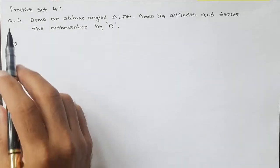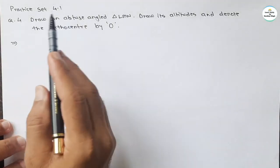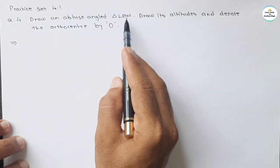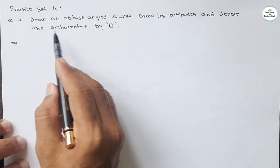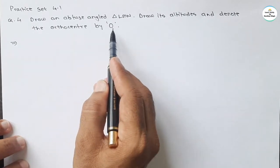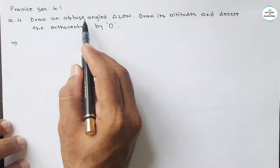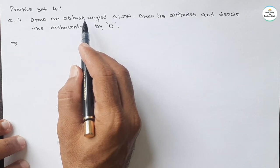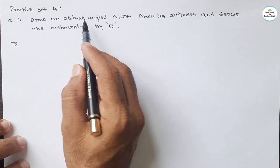See the question number four of Practice Set 4.1: Draw an obtuse angle triangle LMN, draw its altitudes, and denote the orthocenter by O. You know what is an obtuse angle — a triangle where one angle is more than 90 degrees is called an obtuse angle triangle.